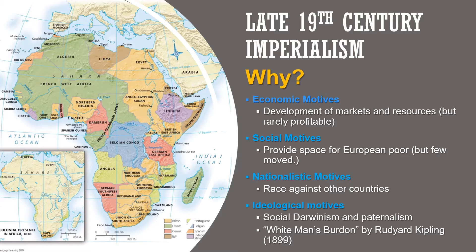Social Darwinism is not at all scientific, and it is quite obviously evil. But it was widely believed amongst European intellectuals that this justified what Europe was doing — their expansion and subjugation of people in other parts of the world. There was also a form of paternalism, the idea that these countries can't fend for themselves, that they aren't as sophisticated, and therefore Europeans have to take care of them by imposing their rule. You can see evidence of these attitudes in all sorts of cultural elements from 19th century Europe.